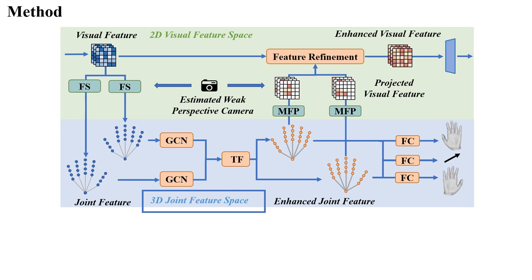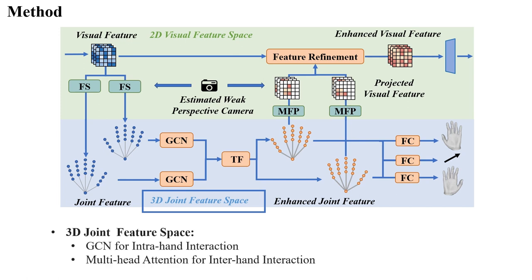In a single Decoupled Iterative Refinement module, we first extract joint features from the visual feature map based on the predicted 3D joint coordinates. In the 3D joint feature space, we use GCN to perform information interaction within a single hand, thereby using hand skeletal kinematic relationships to reduce the interference of low-quality joint features.